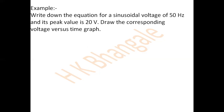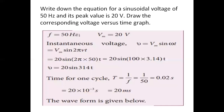Since it is a pure sinusoidal signal, let us write down the standard equation of AC voltage and put the corresponding values in it. The given values are: F = 50 Hz and Vm = 20 volts. The equation for instantaneous voltage is V = Vm sin(ωt).